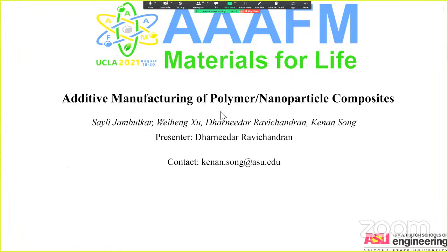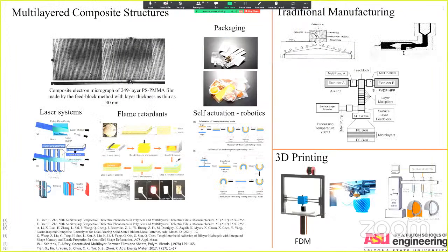I will be presenting on behalf of Keenan Song on the topic 'Additive Manufacturing of Polymer Nanoparticle Composites.' With the growing needs in today's world, better materials are required for satisfactory performance. Multi-layered composite structures were developed by combining two immiscible polymers to improve upon the properties of the individual raw materials for user-specific applications. They have been widely used in packaging and can also find applications as distributed feedback laser systems, flame retardants, or robotics. They have been traditionally manufactured using melt spinning. We believe that by using 3D printing, it is possible to expand the family of materials and include nanoparticles for improving specific properties based on user needs.